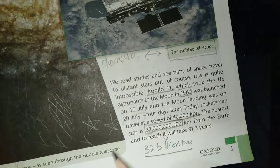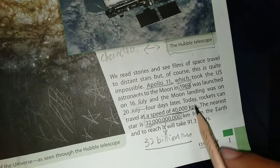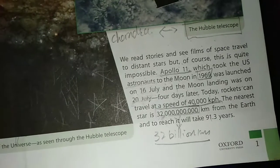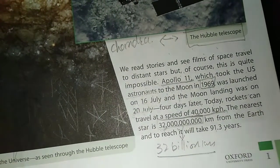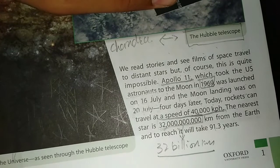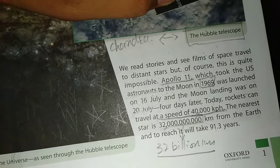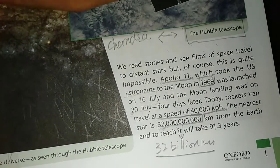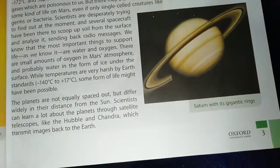Today, rockets travel at a speed of 40,000 km per hour. The nearest star is 32 million million kilometers distance from Earth. If we travel at 40,000 km per hour, it will take about 91.3 years to reach that star.